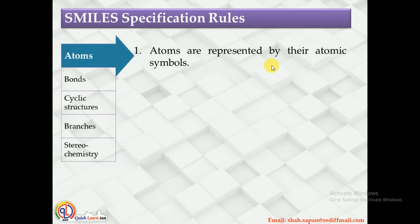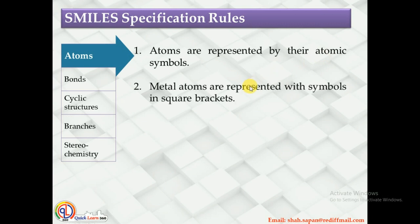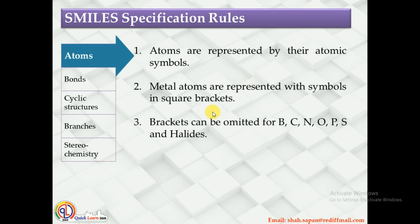Atoms are represented by their atomic symbols only. In case of a metal atom, square brackets are used with the symbols. However, there are certain elements for which you don't need to use any brackets: B, C, N, O, P, S, and all halides.